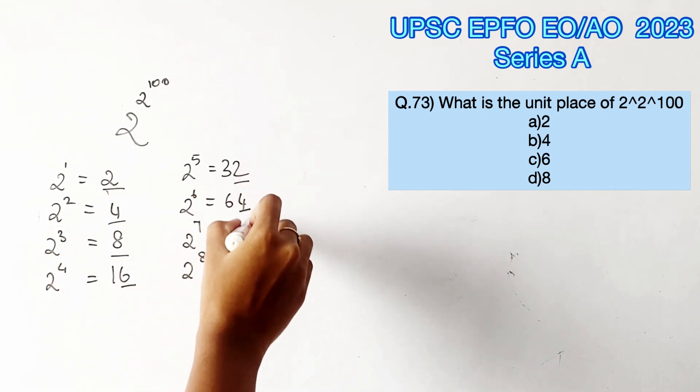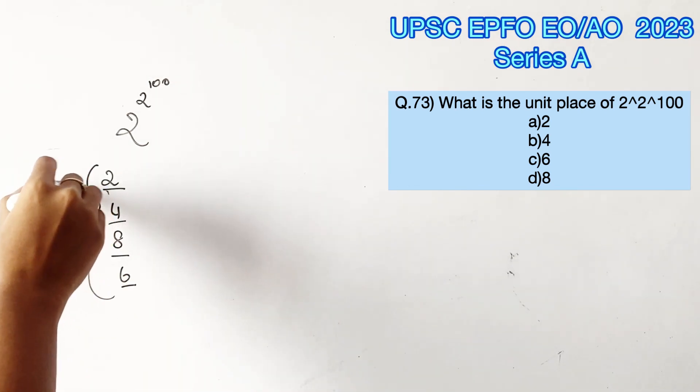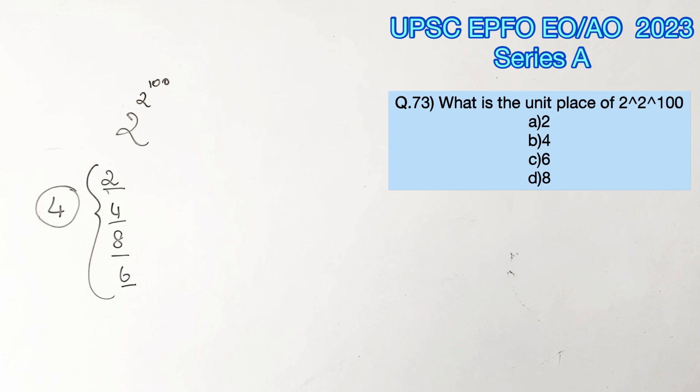If you notice the unit digits, it forms a pattern of 2486, 2486 and so on. So with this we can say that for every batch of 4, the pattern of 2486 repeats itself.